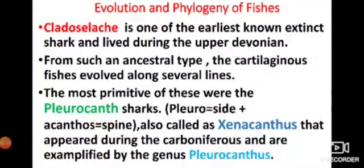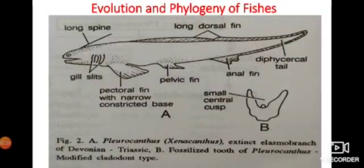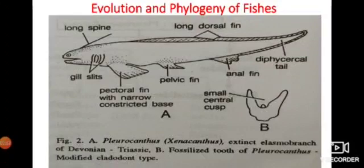This is the Pleuracanthus diagram. You can see the long spine which is clearly visible, and the gills — five pairs of gill slits. Pectoral fins with a narrow constricted base, a long dorsal fin, pelvic fins, anal fin, and a diphycercal tail. So this is Pleuracanthus, which is extinct.